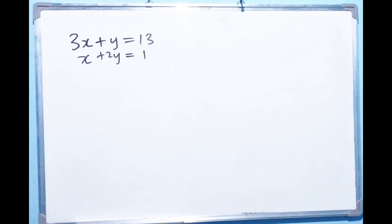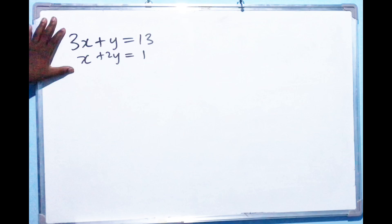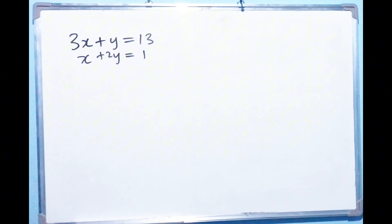Hi everyone. So we have a simultaneous equation and I want to find the value of X and Y. So there are two methods. There is elimination and there is also substitution.